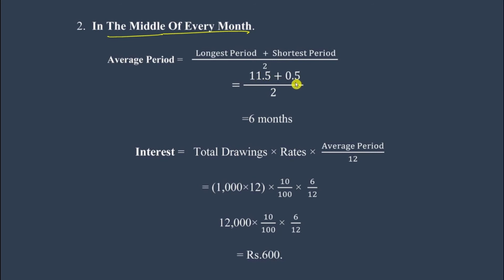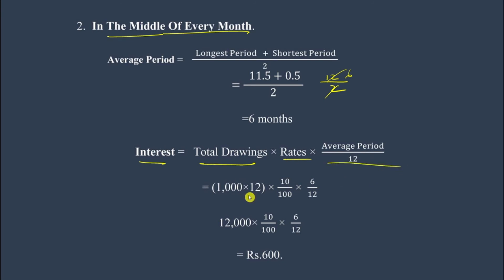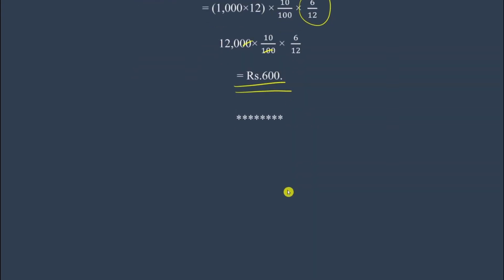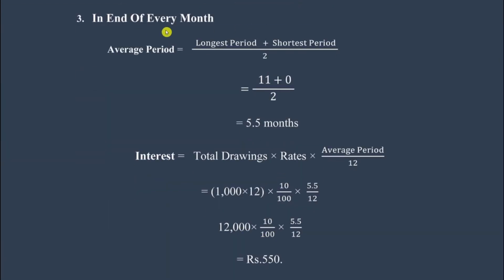Average period = (11 + 1) / 2 = 6 months. Applying the formula: Interest = 1,000 × 12 × 10/100 × 6/12. Cancelling: 120 × 10 × 6/12 = 600 rupees. So for drawings in the middle of every month, the interest is 600 rupees.